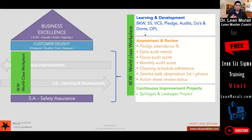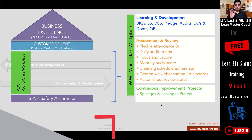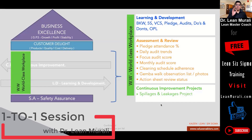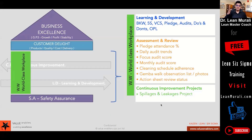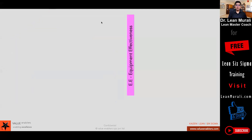When we engage with clients, we understand their needs and take them step by step through all these modules, and finally start doing continuous improvement projects. For example, a project with an objective of zero spillages and leakages will ensure world-class workplace. That is one example. Now let me give another example: equipment effectiveness.